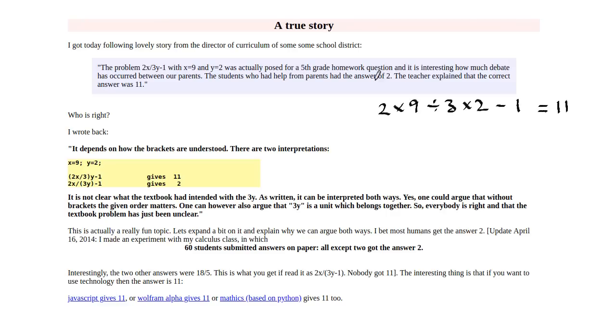So anyway Oliver Nell asks his calculus class this question and 58 out of 60 of them said no it's 2 times 9 over 3 times 2 and then you subtract 1, so that's 18 over 6 which is 3 and then minus 1 makes 2.